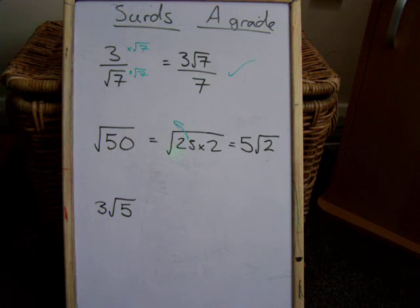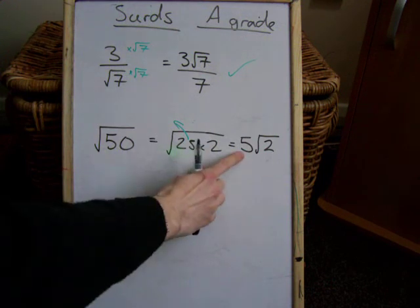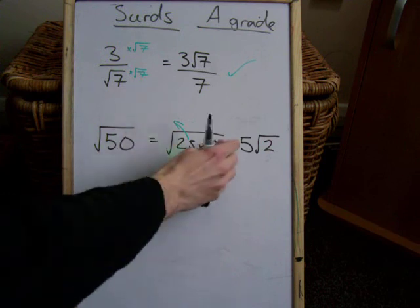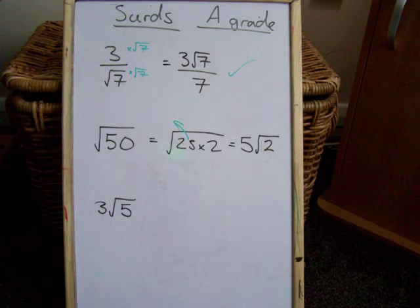That means nothing on the outside of the third there. If you think about what we've done there, the square number came out and was square rooted. So if I've got a number on the outside, to get the 5 back in, I'd have to square it to make 25.